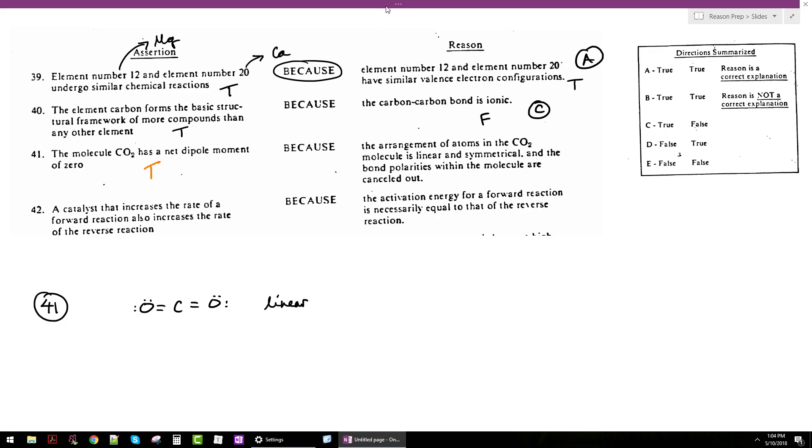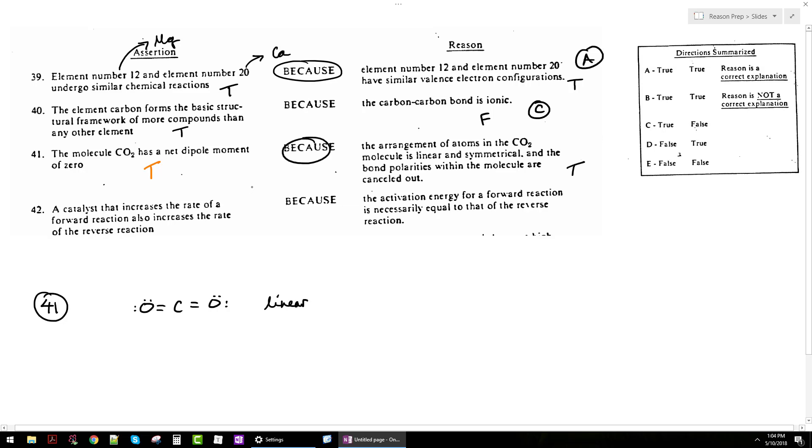The second statement: the arrangement of atoms in the CO2 molecule is linear and symmetrical, and the bond polarities within the molecule are canceled out. Yeah, this is basically what we just said. So this second statement is not only true, this is going to be a true, true CE. So 41 is A.